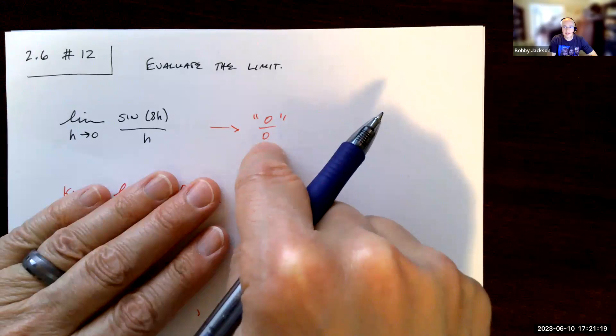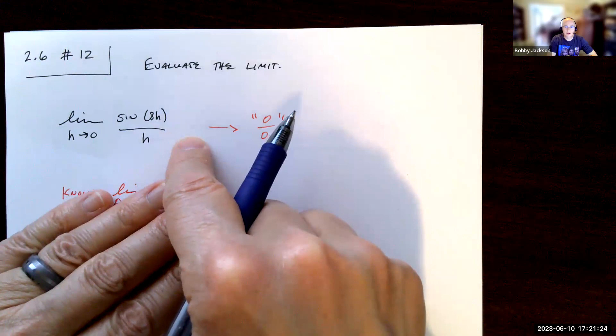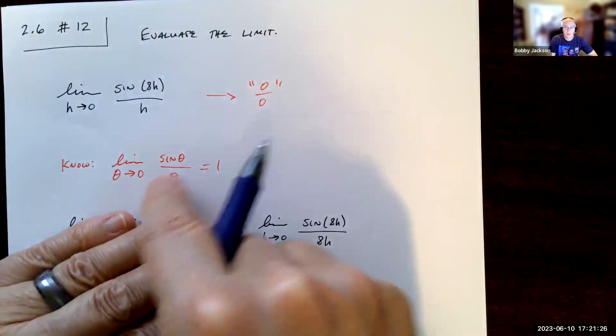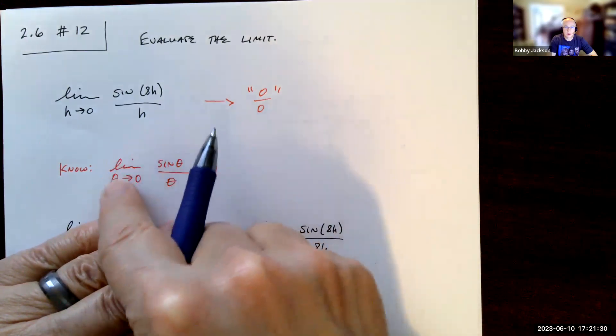And of course that's the indeterminate form. This doesn't mean the limit doesn't exist, it means we've got some work to do. Now when we have limits of this type involving trig functions, we have this important limit.